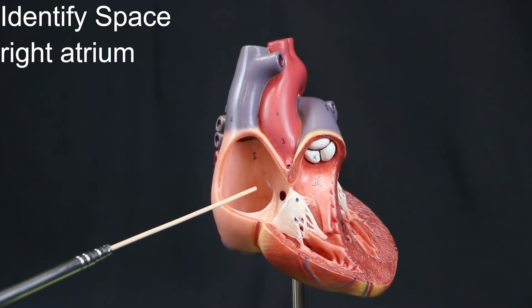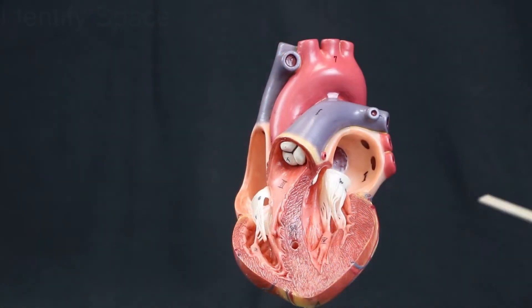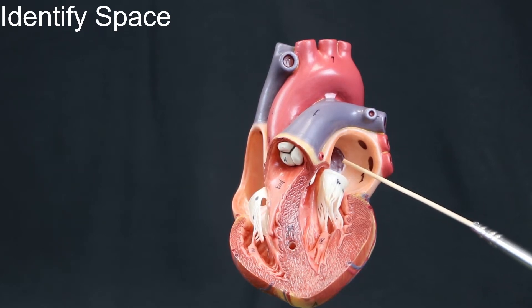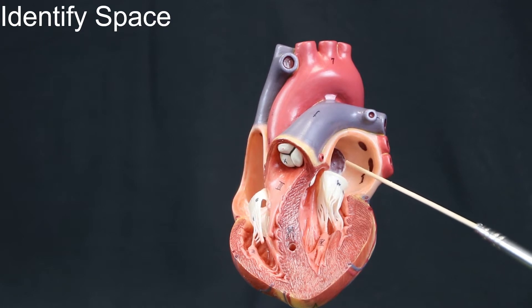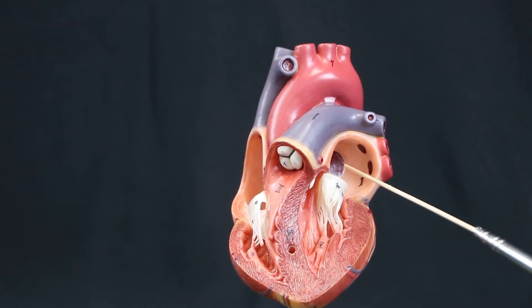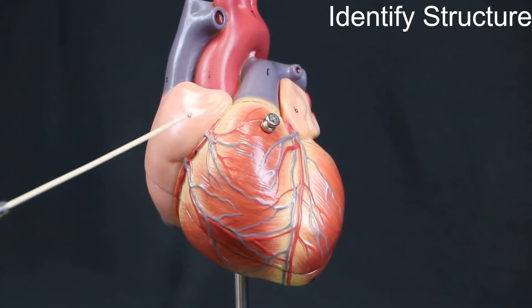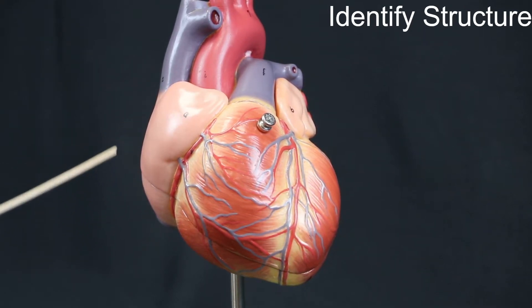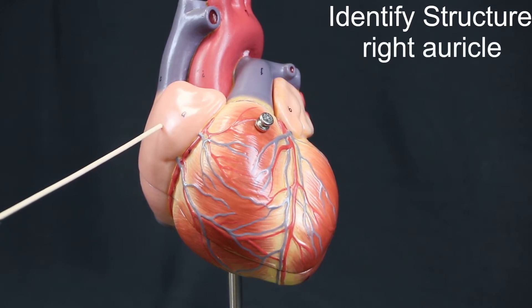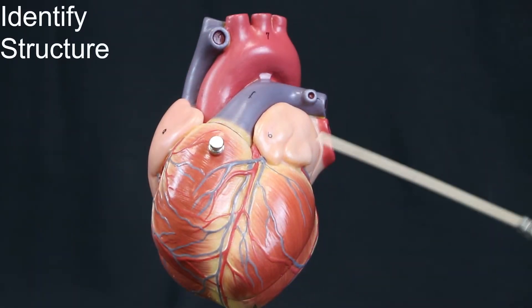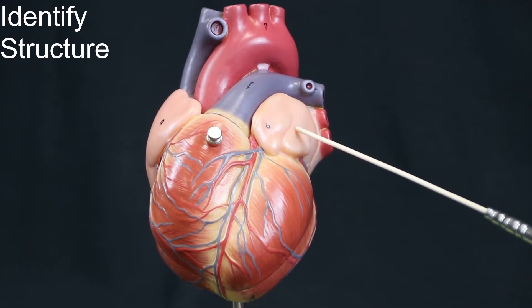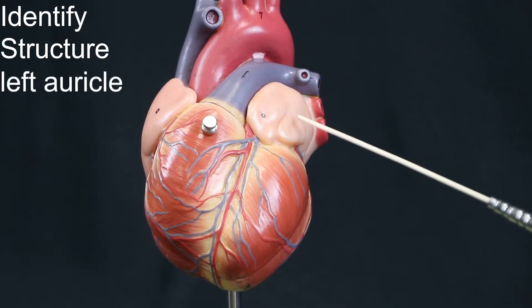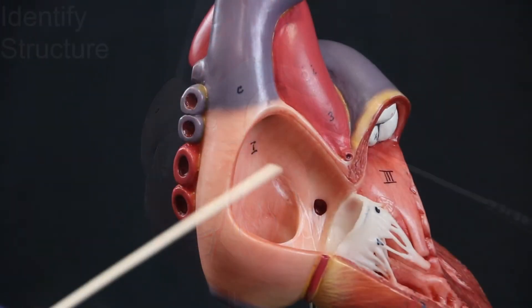The heart chambers and associated structures: Right atrium. Left atrium. Right auricle. Left auricle.